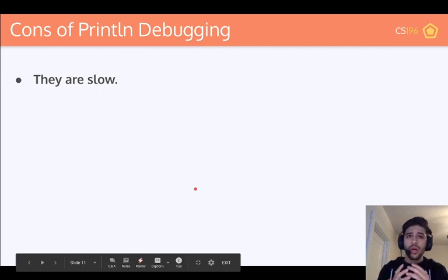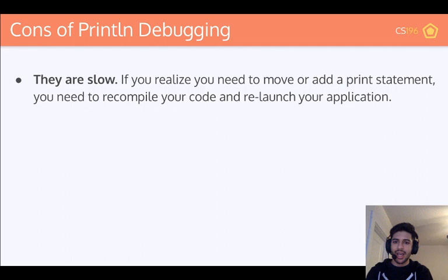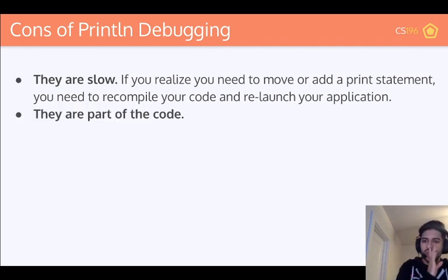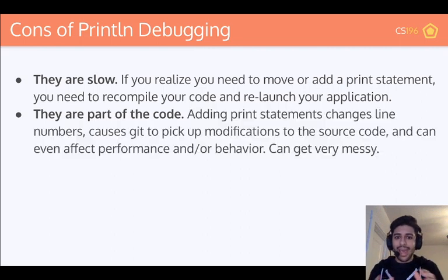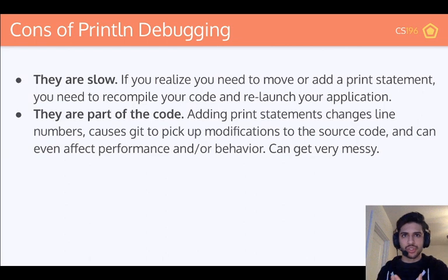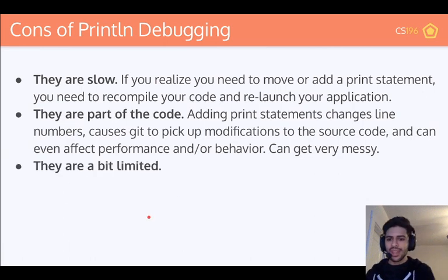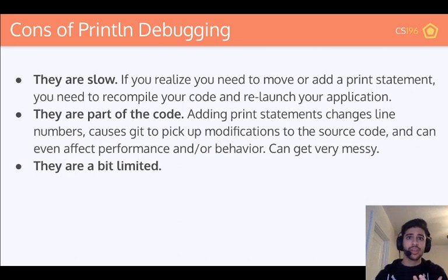What are the cons of print line debugging? For one, they're a bit slow — I had to recompile my code and relaunch my application every single time I added a new print line. Another thing is that they are literally a part of your code. Adding print line statements can change around line numbers, cause Git to pick up weird modifications, and even affect performance and behavior because printing things out costs computational time. In general, it can get very messy. And finally, they're a little bit limited — we'll go over some things later that demonstrate how you can go even further than print line debugging.